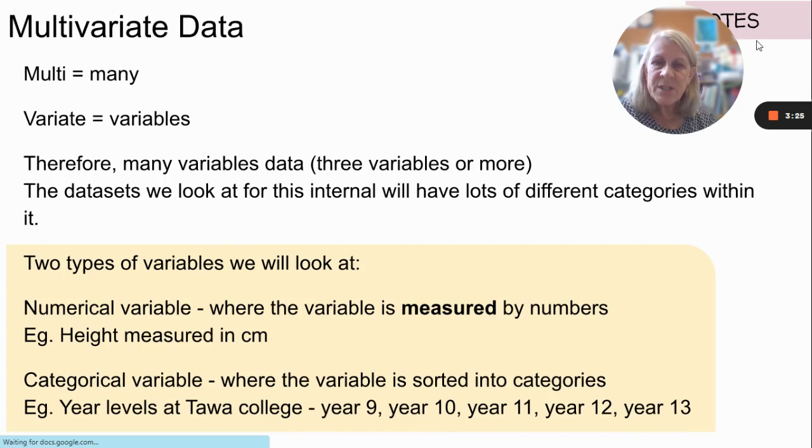Alright, so this one's on multivariate data. Now multivariate data is where we have many variables. Multi means many, variables, variate. And we can have way more than three, or just three.